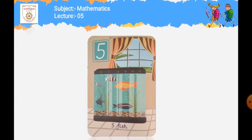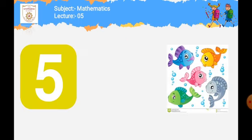اس page پہ آپ کو five سے کیا objects دیئے گئے ہیں؟ آپ کو five fish نظر آ رہی ہیں۔ دیکھیں آپ کو aquarium دیا ہوا ہے اور اس aquarium کے اندر کتنی fishes ہیں؟ Five fish: one fish, two fish, three fish, four fish, five fish۔